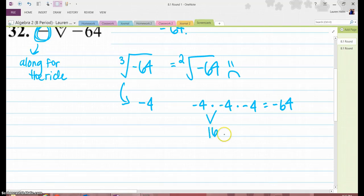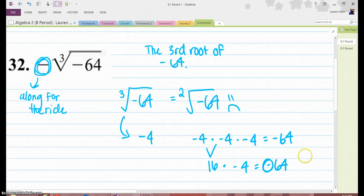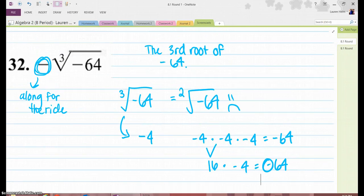But if you multiply it another time by negative 4, you'll get negative 64. So you need that to turn into another negative to actually be able to do the problem.